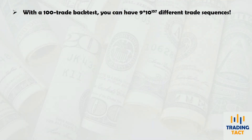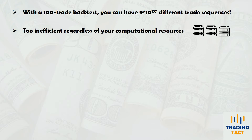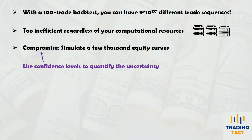Once you start rearranging the trade sequence of your 100-trade backtest, you could generate a total of 10 to the power of 157 different equity curves — an astronomical number that no computer can process in a reasonable time. You can achieve a compromise by simulating only a few thousand equity curves, and then using confidence levels to quantify the uncertainty caused by this simplification. Confidence levels are a concept borrowed from statistics and are used to measure the degree of uncertainty in a sampling method.